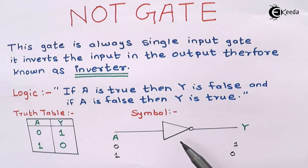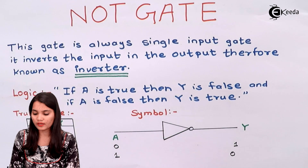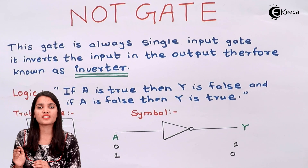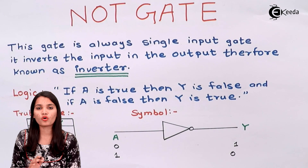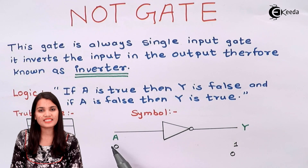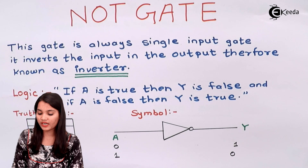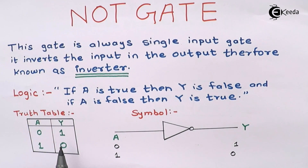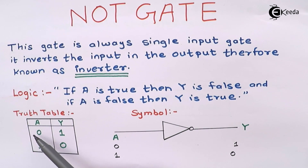This is the symbol for the NOT gate. Always remember, you cannot give two inputs to the NOT gate, because the NOT gate is a single input, single output gate. We don't have more than one input — just A as input and Y as output. In the truth table also, there are only two conditions, because we have only one input. Two raised to the power one gives us two, so only two cases are present in the truth table.